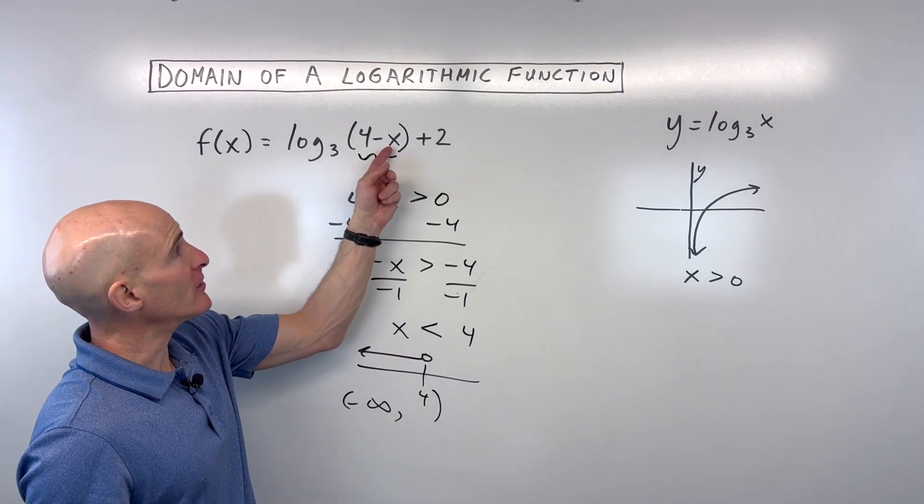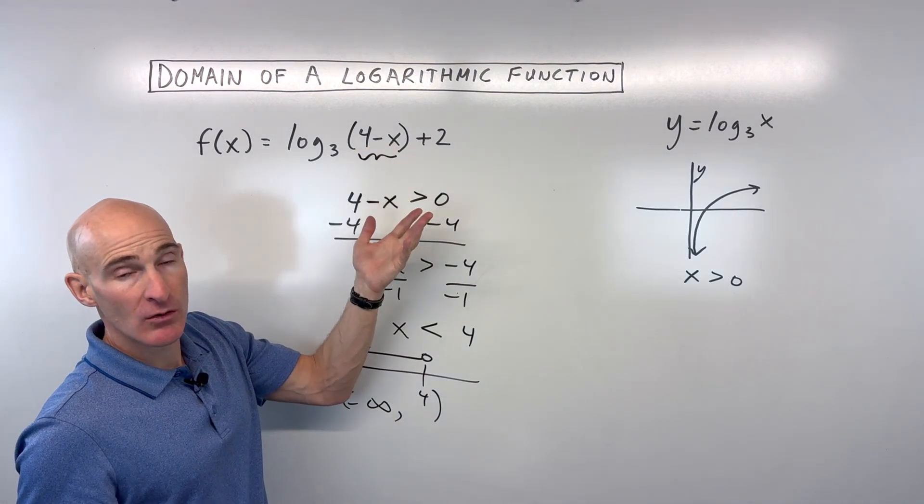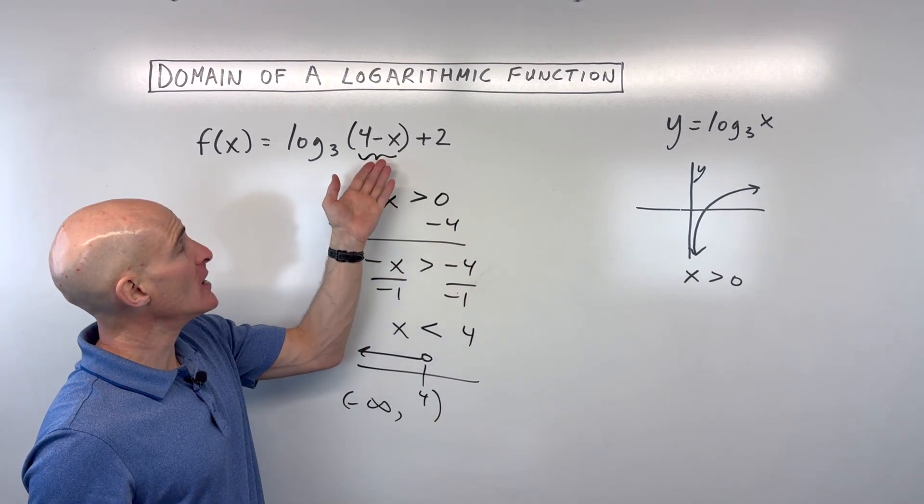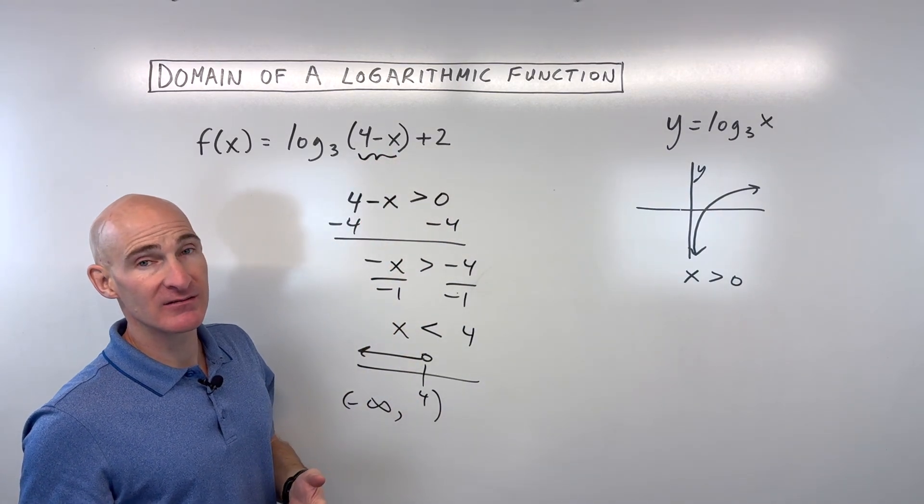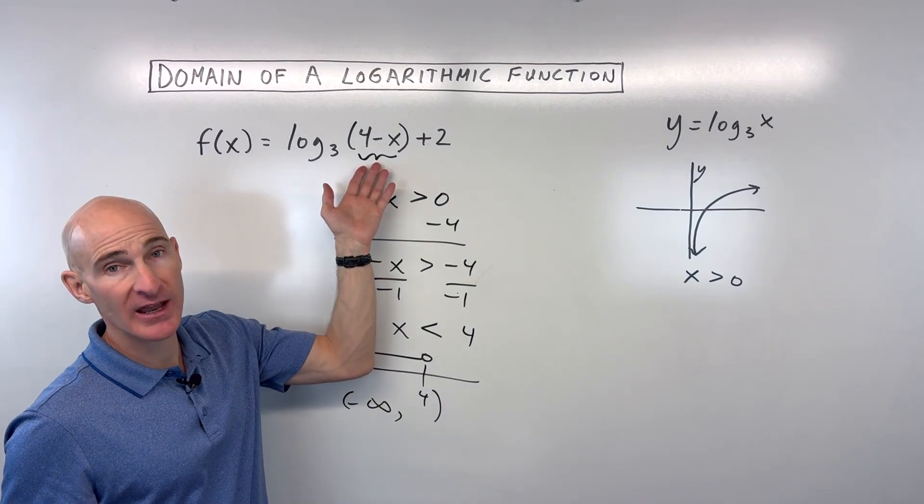And that makes sense, because for example, if I put 3 in, 4 minus 3 is 1. Okay, that's a positive value. But if I put 5 in, 4 minus 5 is negative 1. We can't take the log of a negative number.